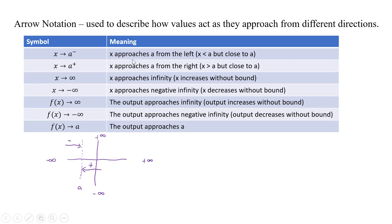All the notations are: as x approaches a from the left; as x approaches a from the right; as x approaches infinity, meaning x increases without bound; as x approaches negative infinity, meaning x decreases without bound. And then f of x approaches infinity — the output increases without bound — or f of x approaches negative infinity, meaning the output decreases without bound. And here our output approaches some value a.